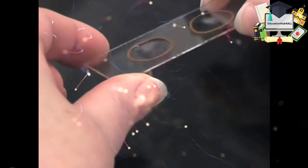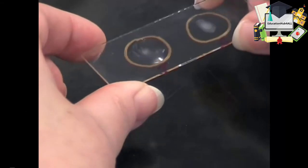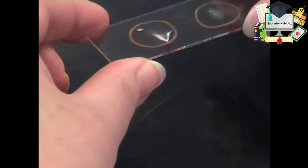If you see the cells begin to clump together, this is a positive reaction. There should be no clumping present in the negative control.